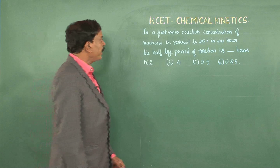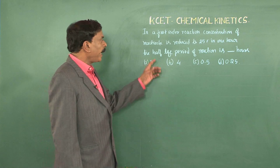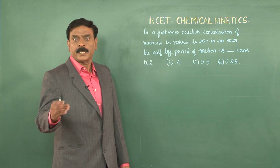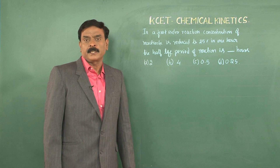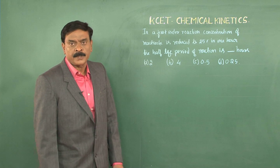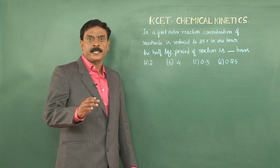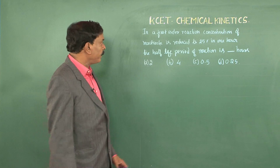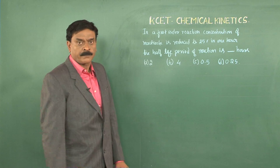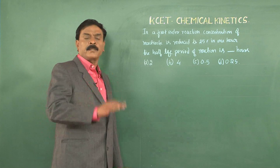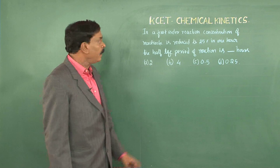Coming to the half-life period of a reaction: we define half-life period as the time taken for 50% of the reactants to be consumed. We use half-life period because the time taken for 100% completion of any reaction is infinite. Half-life period indicates whether the reaction is slow or fast — the lower the half-life period, the faster the reaction. The rate of a reaction is inversely proportional to the half-life period.